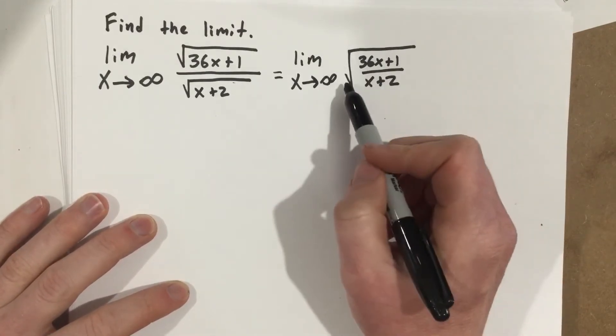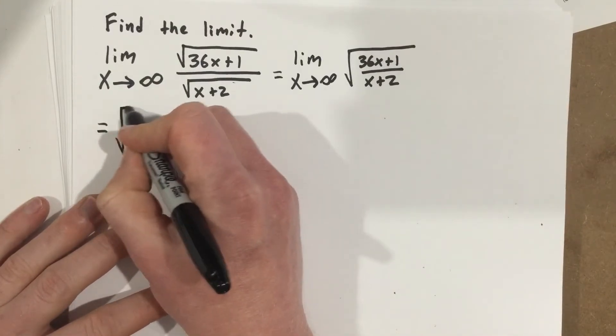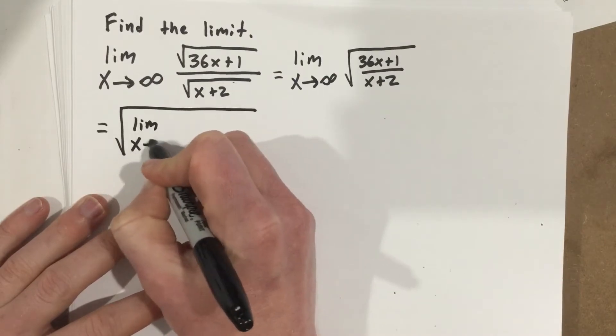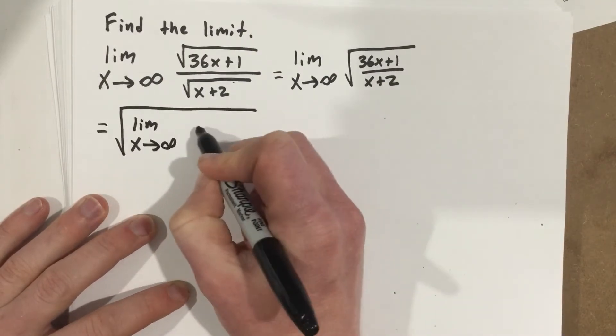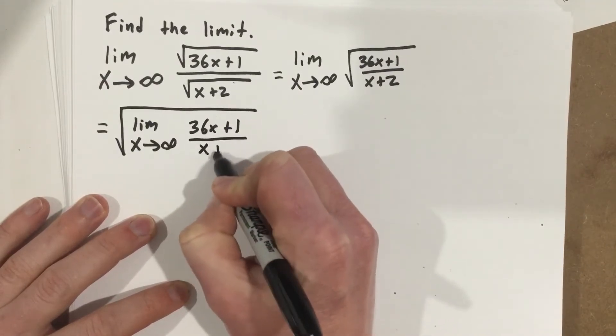We could even go farther with this. We could say that means if I take the root of the whole thing, limit as x approaches infinity of 36x plus 1 over x plus 2.